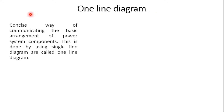So this is the definition: the single line diagram is the concise way of communicating the basic arrangement of the power system components. It is also called a one-line diagram. It shows the exact electrical connections of the circuits, and all components are represented by considering all three phases. It is universally accepted for depicting the electrical connections of complicated networks.